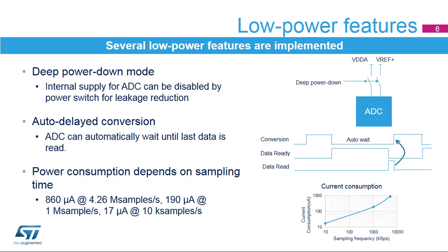The STM32WB's ADCs support a deep power-down mode. When the ADC is not used, it can be disconnected by a power switch to further reduce the leakage current.